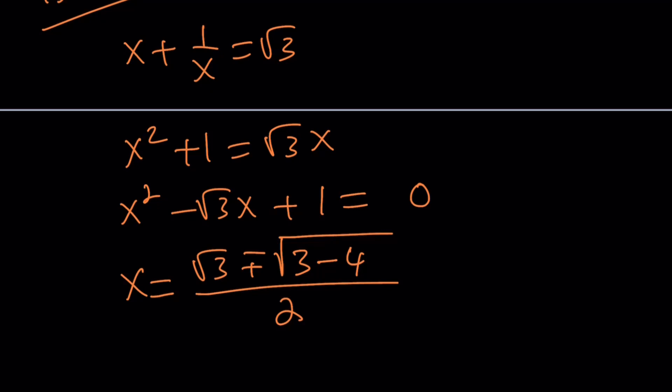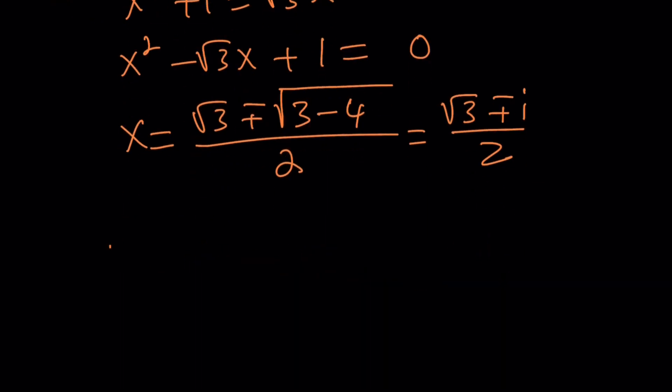Let's just solve it. 3 minus 4 is negative 1, so this is going to give us square root of 3 plus minus i over 2. So I'm getting two values of x here. Let's just use one of them, root 3 plus i over 2.